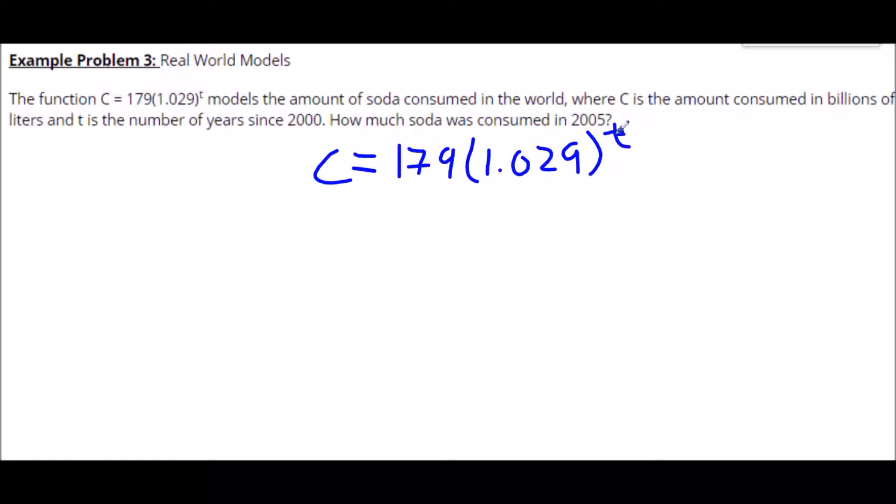Now t is actually represented not by the actual year 2005 but the number of years since 2000. So instead of plugging in 2005 for t, we have to think from 2000 to 2005 how many years have passed. Well that is a total of five years.